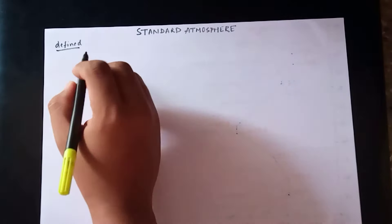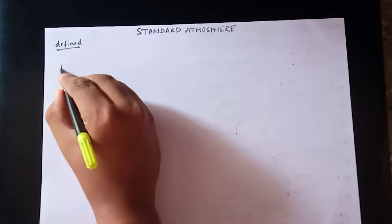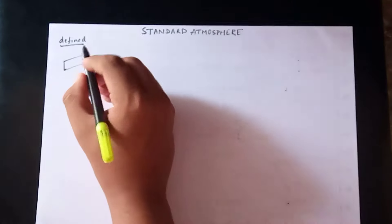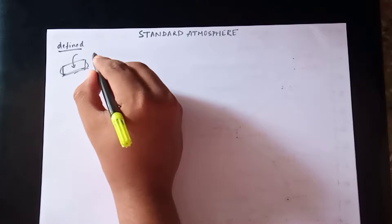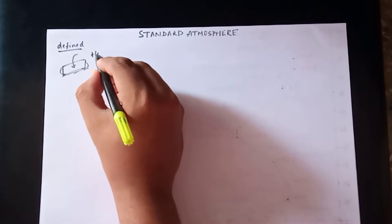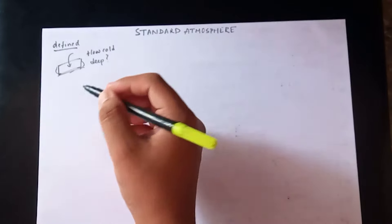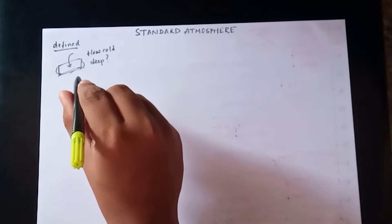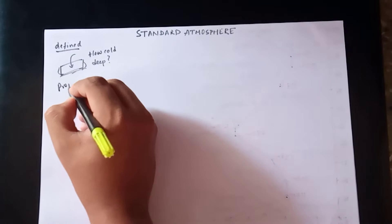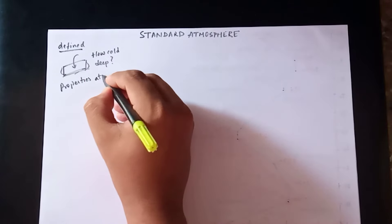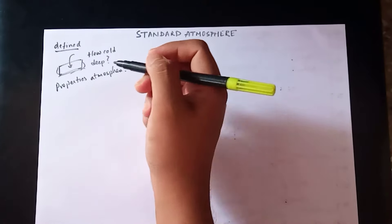Consider a pool — questions arise like how cold it is, how deep it is, etc. Similarly, when you are flying an aircraft, simple questions arise about the whole atmosphere: what are the properties of the atmosphere, how does the atmosphere behave, and how do they change with time?